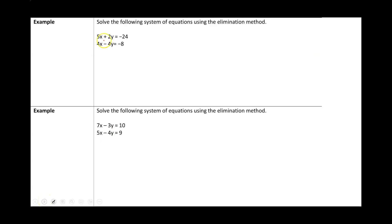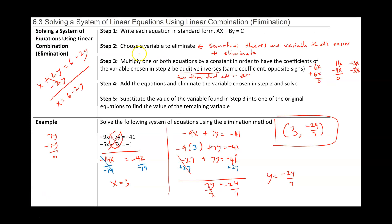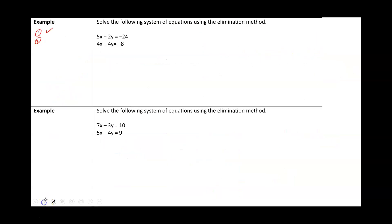Let's take a look at example two. We have 5x plus 2y equal to negative 24, and 4x minus 4y equal to negative 8. Step one: these equations are already in standard form. Step two: choose a variable. It could be x or y, but notice that 2 and 4 — two can be turned into four very easily, so the y's might be easier to eliminate. I'm going to choose y as my variable.